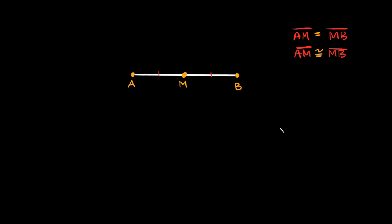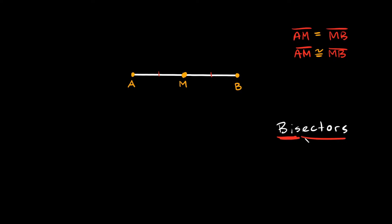Now let's talk about segment bisectors. You can probably guess what it means just by looking at the word. The prefix "bi" means two — think of bicycle, two wheels, or bisexual, interested in boys and girls. So we're splitting a segment into two sections, or sectors.